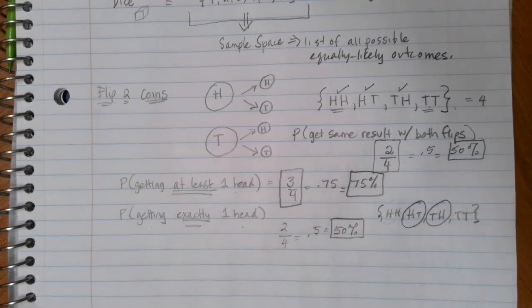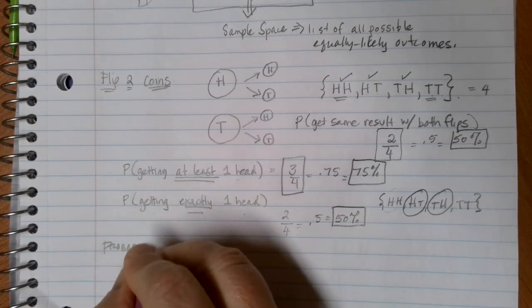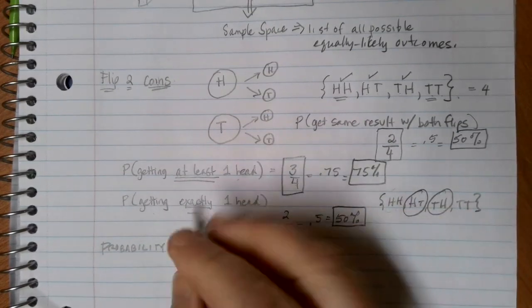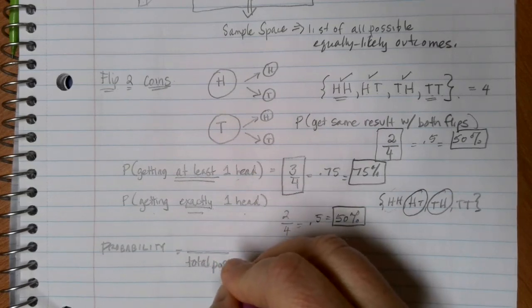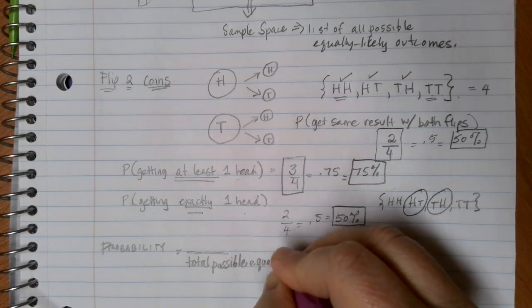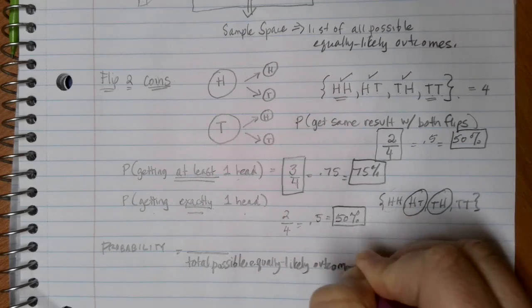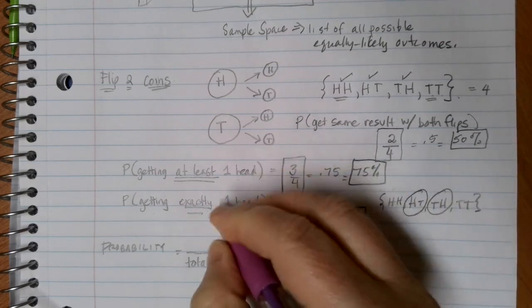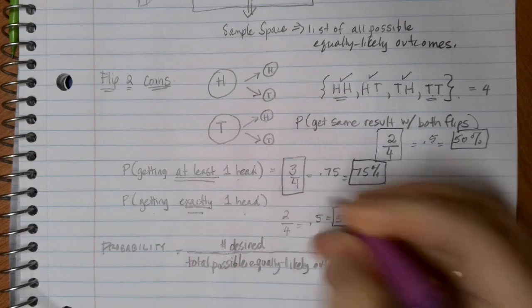So here, what we're doing again is we're calculating probability. And with our theoretical probability, we are still talking about creating a fraction. The bottom value of my fraction is going to be the total possible equally likely outcomes. And if we can list those in our sample space, that's a great way to do our calculation. And then the top is just going to be the number of desired outcomes that are specific to whatever probability you're trying to calculate.